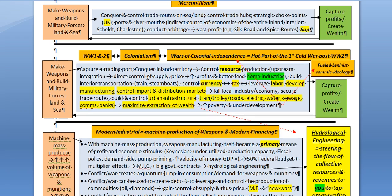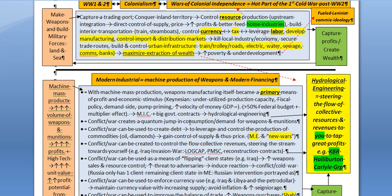Machine production vastly increased the volume of output and productivity. The Industrial Revolution was involved in the last two eras: the colonialism era, where colonial expansion went hand-in-hand with home industries — you needed colonies for raw materials to fuel your industries and as outlet markets for excess manufactured goods — and also the industrial machine production of weapons and munitions.